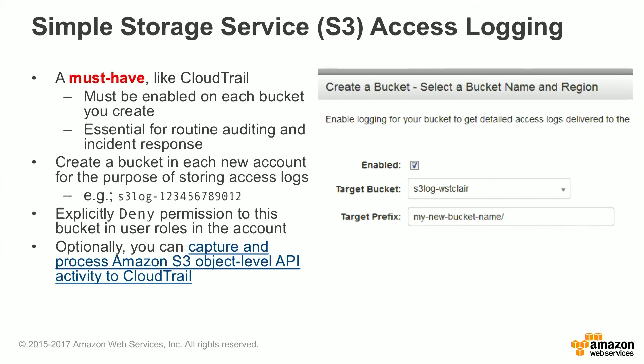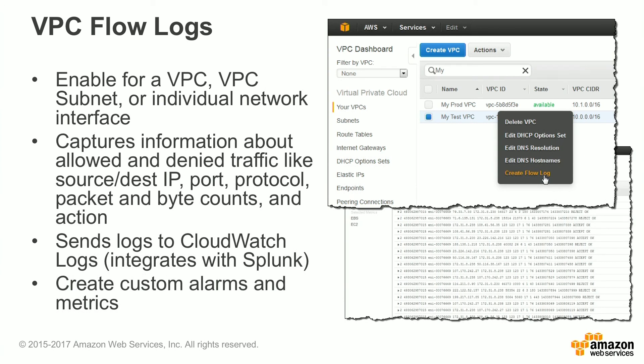VPC Flow Logs capture information about allowed and denied traffic, such as source and destination IP addresses, ports, protocols, packets, byte counts, and actions. These are enabled either on a per-VPC level, VPC subnet level, or individual network interface level. You can send these logs to CloudWatch Logs, and from there export them to S3, integrate them with third-party solutions such as Splunk, or send them to an Elasticsearch cluster. There are many things you can do with VPC Flow Logs once they arrive in CloudWatch Logs.